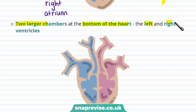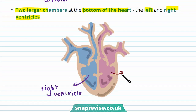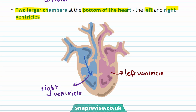There are also two chambers at the bottom of the heart: the left and the right ventricles. Deoxygenated blood is pumped from the right atrium to the right ventricle. Oxygenated blood is pumped from the left atrium to the left ventricle.